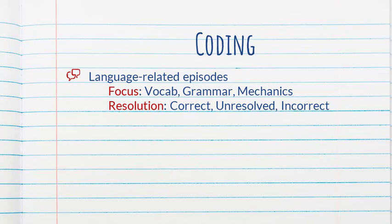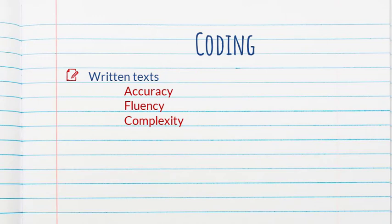And in terms of resolution, whether it was correctly resolved, unresolved, or incorrectly resolved. And the written text, the stories that the learners wrote, were coded for accuracy, fluency, and complexity.